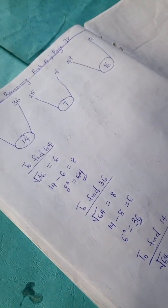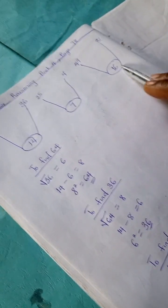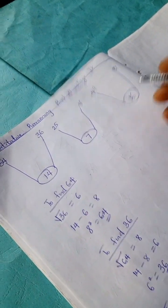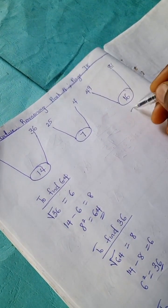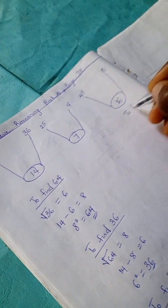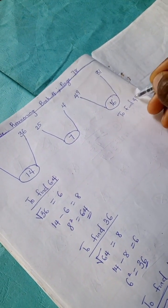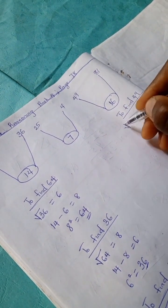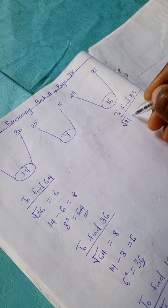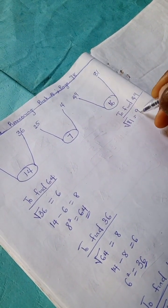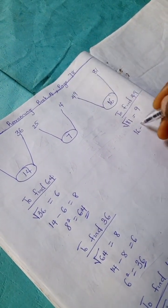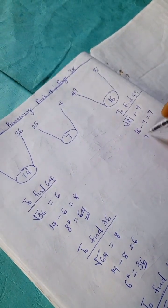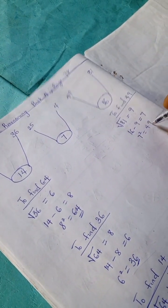Okay, so we're going to find square root of 49. We take the square root of 81, which is 9, and 16 minus 9 is 7. So 7 squared is 49.